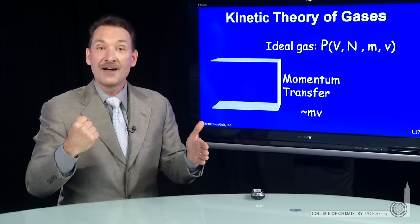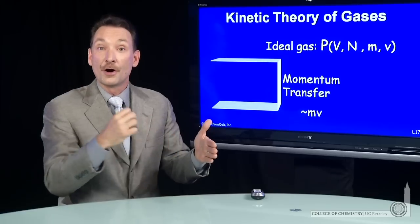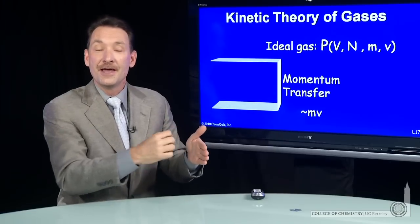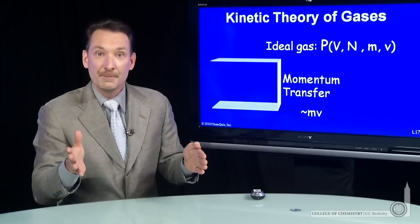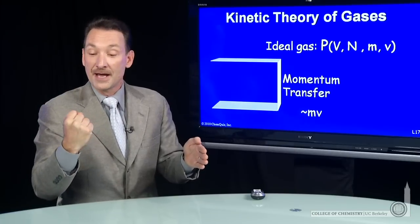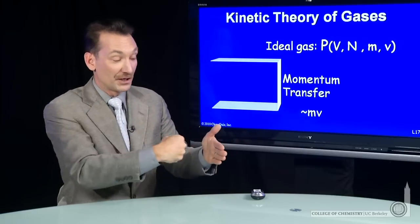So if I have a bromine, a very massive particle, smashing into the walls of the container, or a hydrogen particle, very light, smashing into the walls of the container, they can exert the same pressure because they can transfer the same momentum. The bromine does it by coming in with a heavy mass and striking the walls of the container.